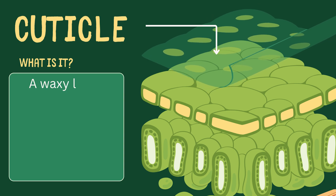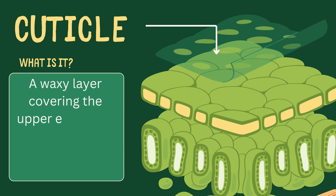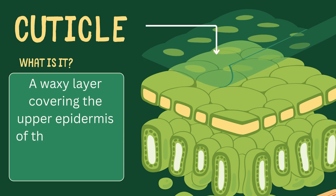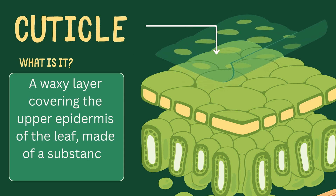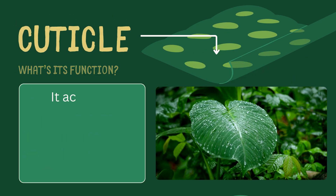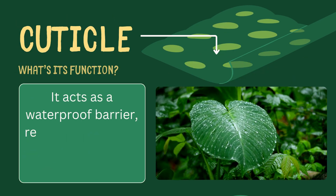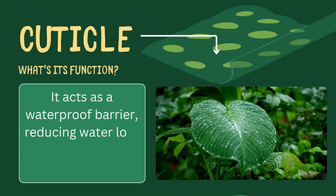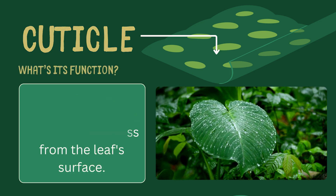Cuticle. It is a waxy layer covering the upper epidermis of the leaf, made of a substance called cutin. It acts as a waterproof barrier, reducing water loss from the leaf's surface.